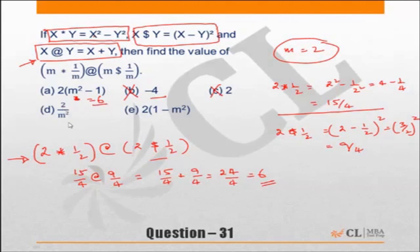Choice d is 2 upon 4 equal to 1 by 2, incorrect. We need a value of 6. Choice e, 2 into 1 minus 4, this is a negative number. Choice e is incorrect. Only one choice gave the value of 6. Hence that is the correct answer.